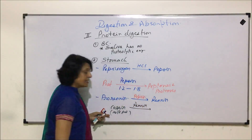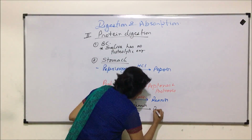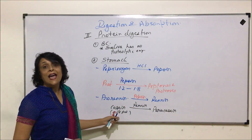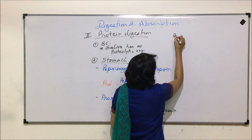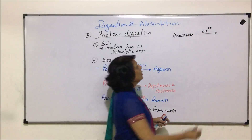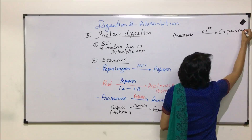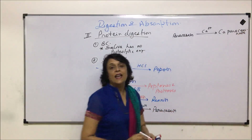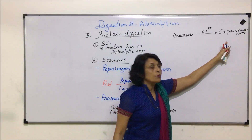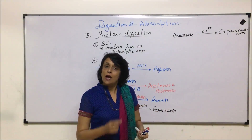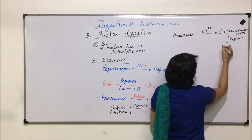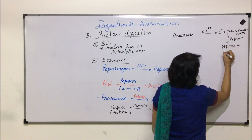Casein, the milk protein, is acted upon by renin and is converted into paracasein. Paracasein, in the presence of calcium ions, is converted into calcium paracaseinate, which is a curd-like substance. This curd-like substance remains in the stomach and is then acted upon by pepsin, which breaks it down into smaller polypeptides — peptones and proteoses.